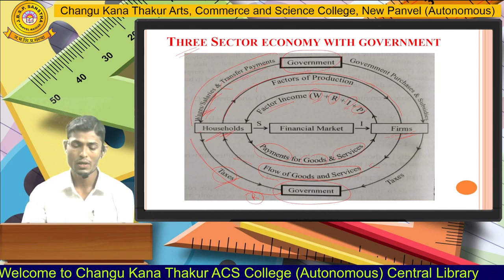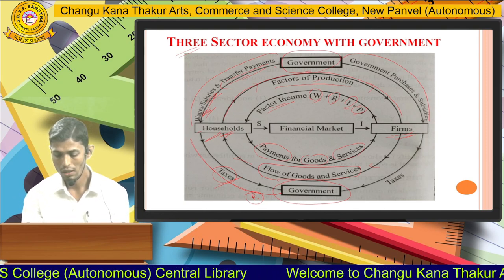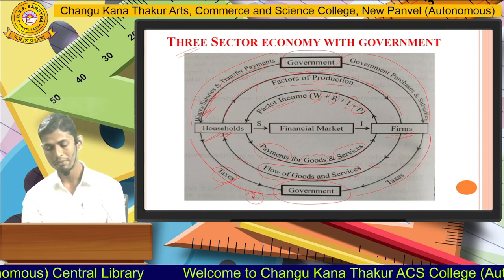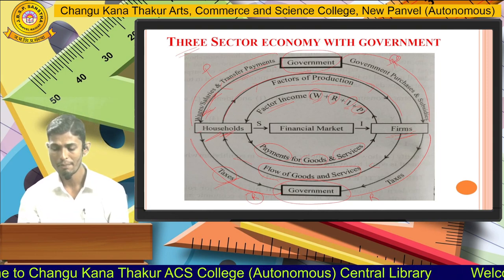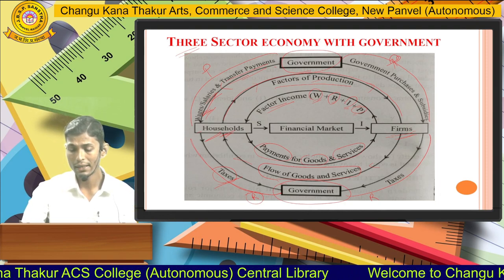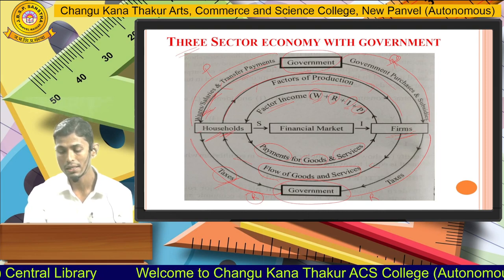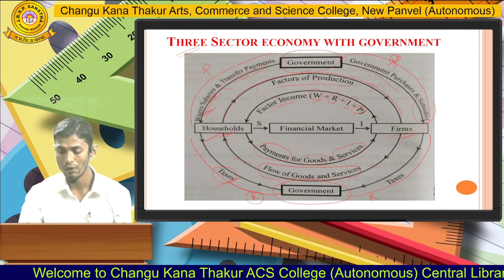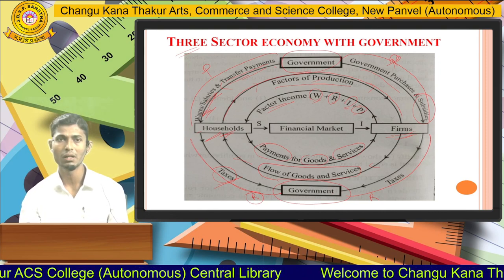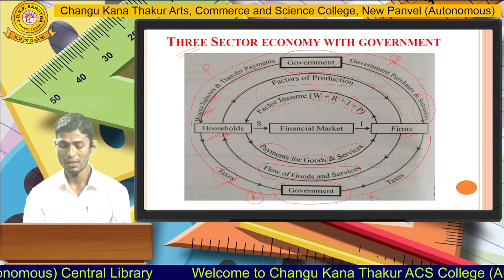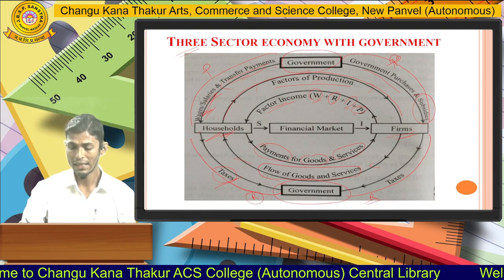Now looking at the interaction between government and firms: the government sometimes makes payments to firms when it purchases inputs or equipment, and it also provides subsidies to firms. On the other hand, firms pay corporate tax to the government, which is a receipt for the government. Government purchases and subsidies flow towards the firms.